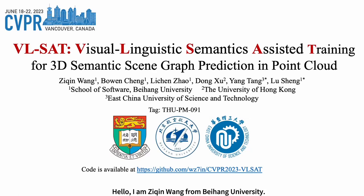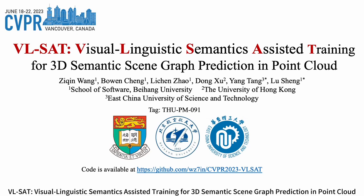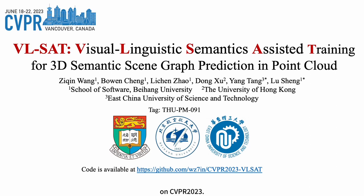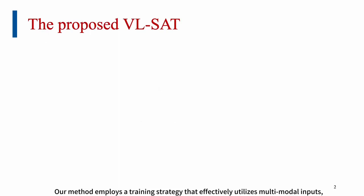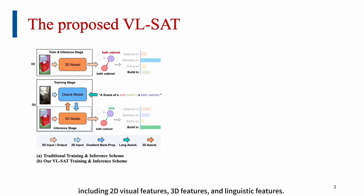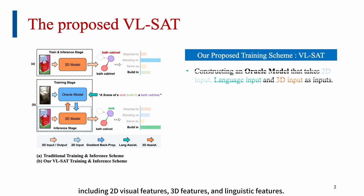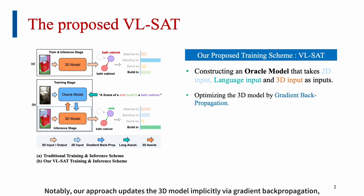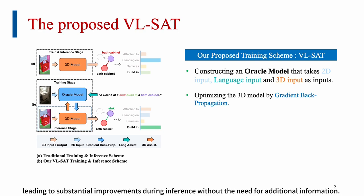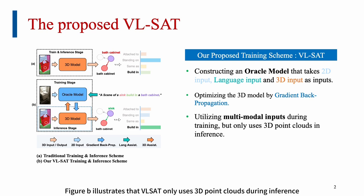I am Ziqin Wang from Beihang University. I am here to present our work, VLSAT: Visual Linguistic Semantics Assisted Training for 3D Semantic Scene Graph Prediction in Point Cloud, at CVPR 2023. Our method employs a training strategy that effectively utilizes multimodal inputs, including 2D visual features, 3D features, and linguistic features. The Oracle model we build during training addresses the issue of sparse point clouds in object data. Our approach updates the 3D model implicitly via gradient backpropagation, leading to substantial improvements during inference without the need for additional information. VLSAT only uses 3D point clouds during inference despite leveraging multimodal inputs during training.